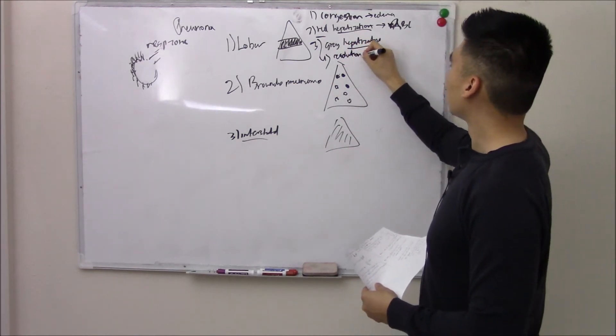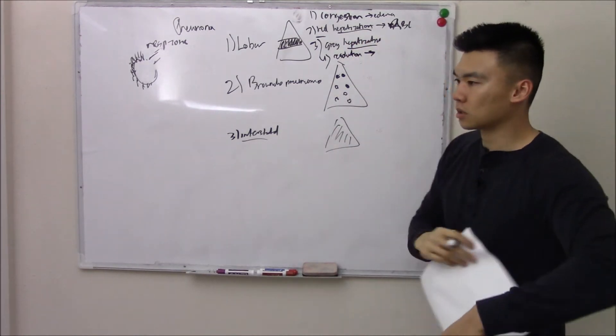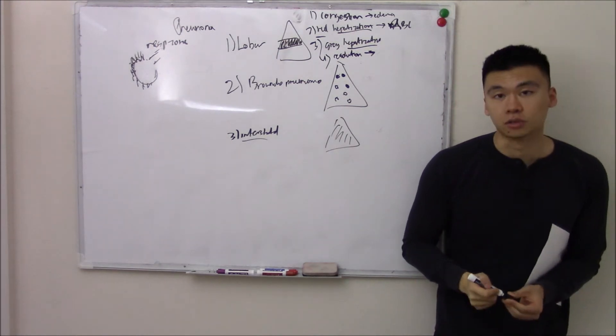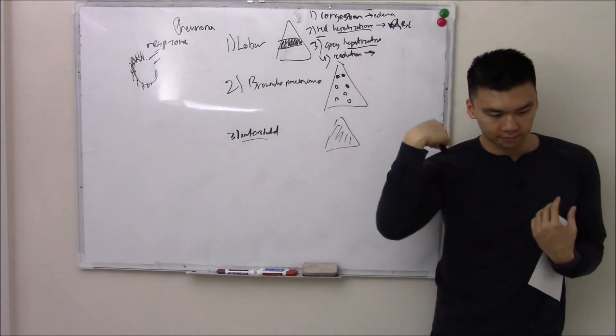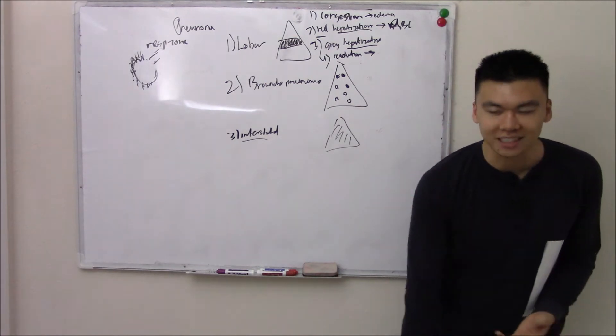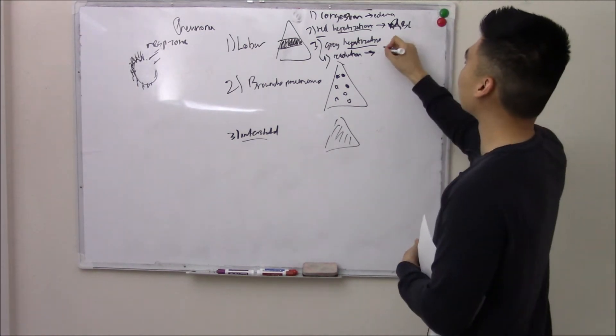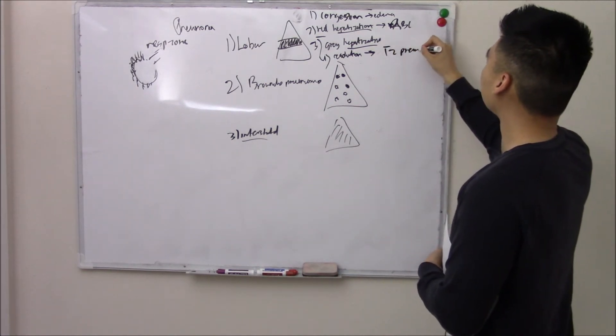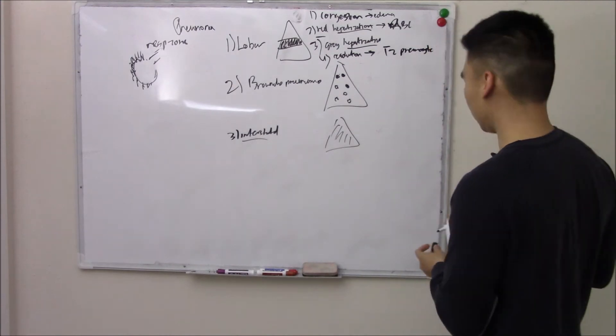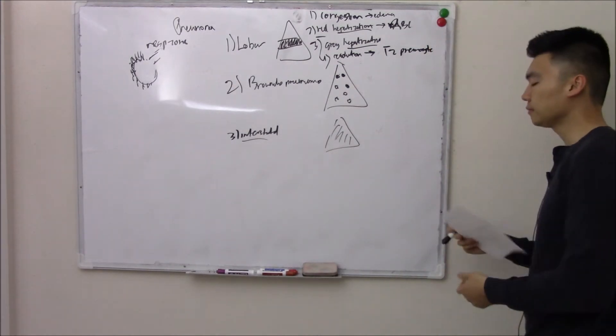And if there's damage, then your stem cells of your lungs will try to replenish the tissue. What's the stem cells of your lungs? If you said type 2 pneumocyte, you're absolutely right. Type 2 pneumocyte.